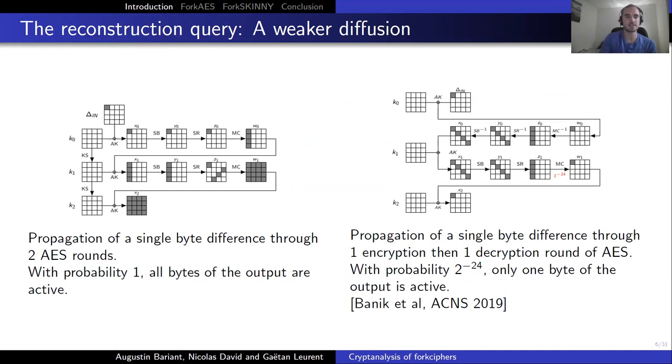To illustrate this, let's look at the propagation of a single byte input difference on two encryption rounds of AES versus one decryption then one encryption round of AES. So in the first case, with probability one, we end up with a full active state, whereas with probability 2 to the power minus 24, we end up with only one active byte in the second case.